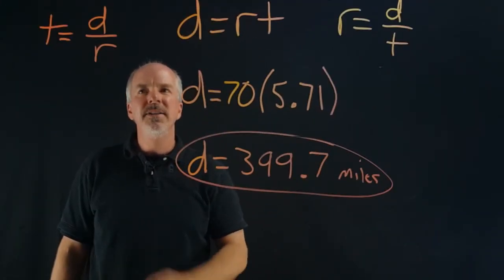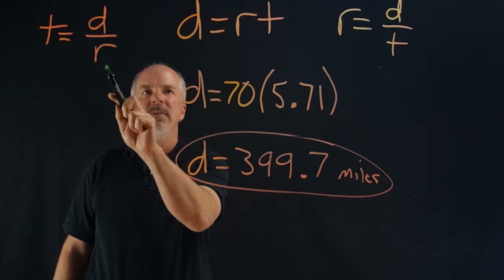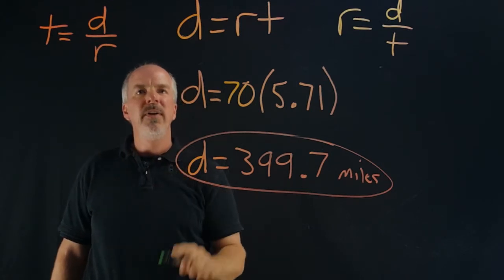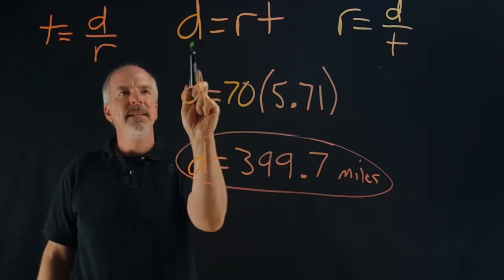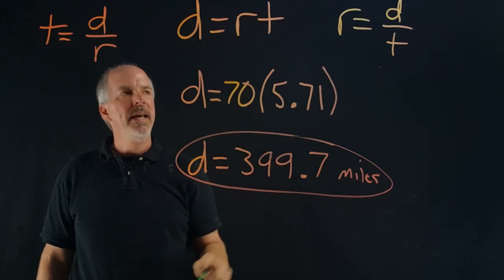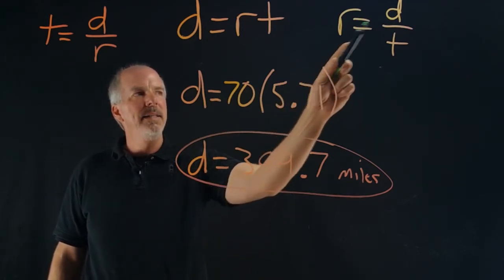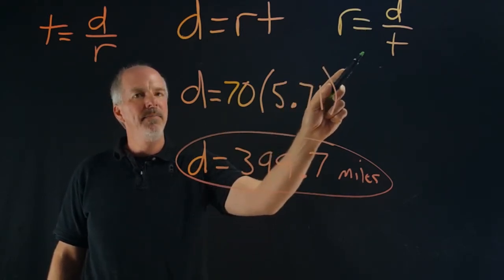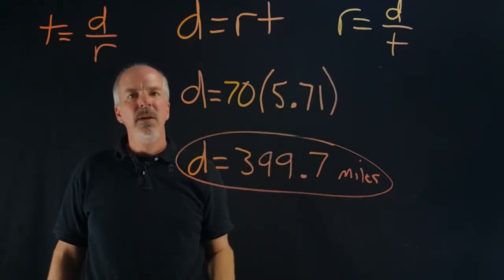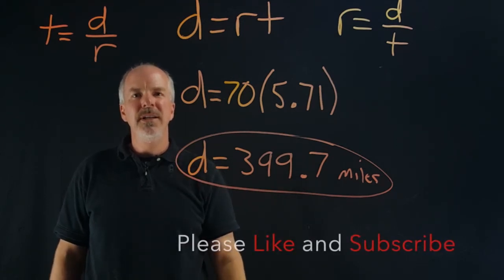So we found time by dividing distance by rate. We found distance by multiplying rate times time. And we found rate by dividing distance by time. All these problems involved Mustangs because this was our special edition of Mustang Math.